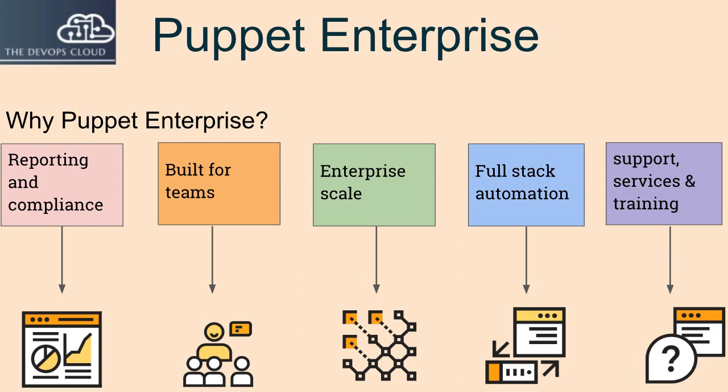Puppet Enterprise is made up of various components and services including the Master of Masters and Compile Masters, the Puppet Agent, console services, code manager and R10K, orchestration services, and databases.